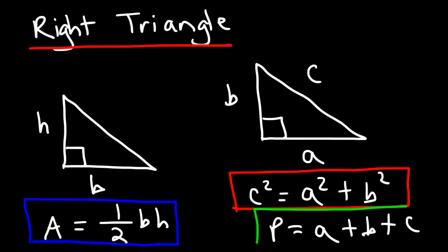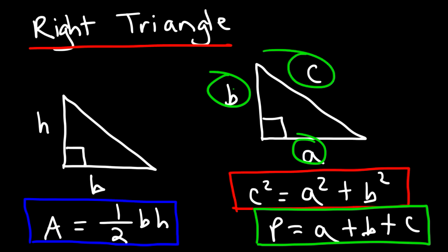Sometimes you might get a question asking for the perimeter of a right triangle — just add up all three sides. That's all you have to do.